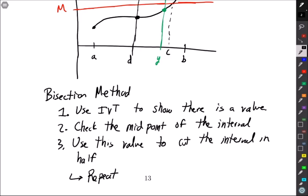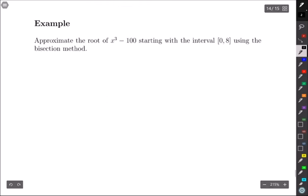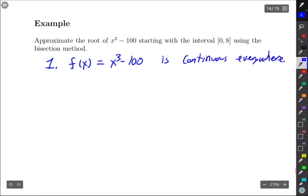So we're going to get two examples, one easier one a little trickier to show how this works. Example one: Approximate the root of x³ - 100 starting with the interval [0,8] using the bisection method. So step one, f(x) = x³ - 100 is continuous everywhere. That's great. Means we can use IVT on whatever intervals we want to find the answer to this problem. Now let's check our endpoints.